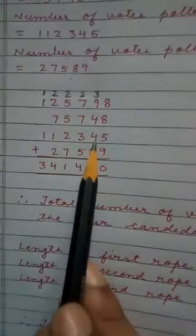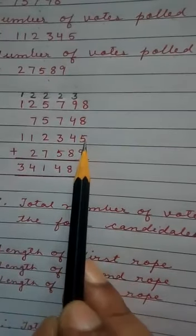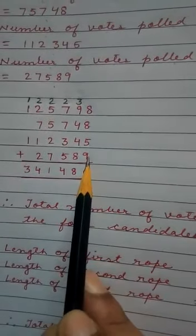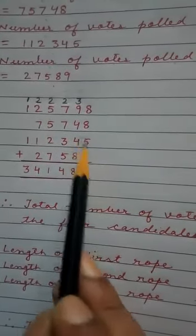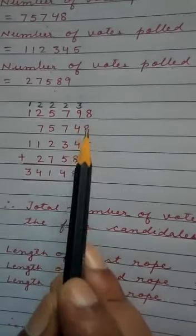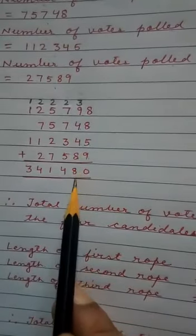Now we will add it. So 8 plus 8, 16, 16 plus 5, 21, 21 plus 9, 30. Now 0 we write here and 3 here. So 3 plus 9, 12, 12 plus 4, 16, 16 plus 4, 20, 20 plus 8, 28.